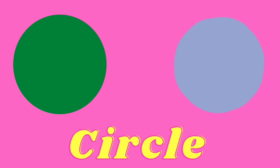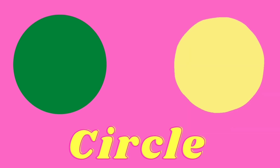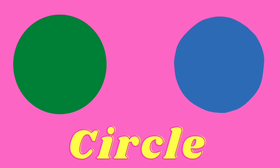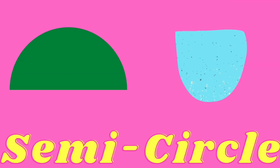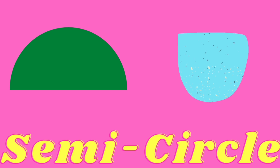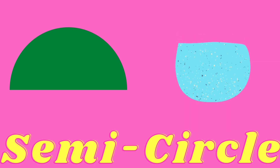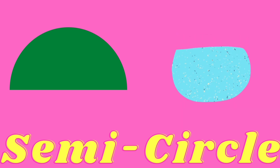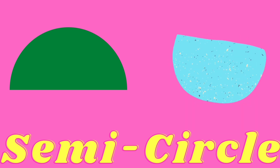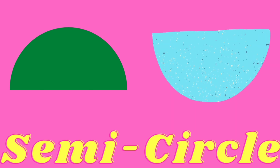Circle. A circle is a round shape and all points in a circle lie in a plane. The distance from any point on the circle to its center is called the radius. This is a semicircle.